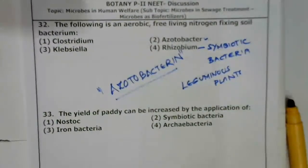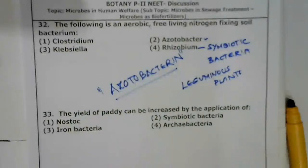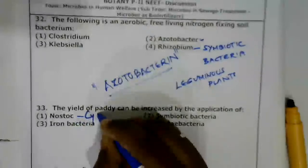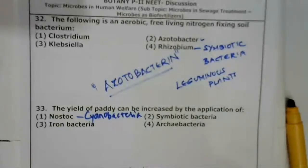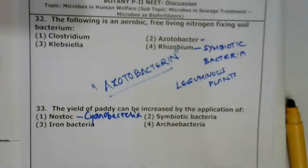Question 33: The yield of paddy can be increased by the application of which organism? Farmers note that 50% of crop yield can be enhanced with cyanobacteria. Among the options — Nostoc, symbiotic bacteria, iron bacteria, archaebacteria — Nostoc is a cyanobacteria and is the correct match. Along with Nostoc, Oscillatoria and Anabaena are also cyanobacteria that can be used in paddy fields.